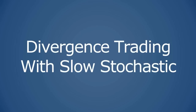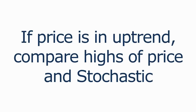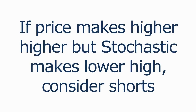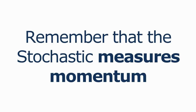Divergence trading: price goes one way, stochastic goes another. This was the original play that Lane was looking at when developing the stochastics, but an indicator signal by itself is not always the smartest opportunity. If price is in a downtrend, compare the lows of price and the stochastics. If prices are in an uptrend, compare the highs of price and the stochastics. If price makes a lower low but the stochastics makes a higher low, consider longs. If price makes a higher high but the stochastics makes a lower high, consider shorts. The stochastic measures momentum — even though price is moving down, the momentum calculation is pointing to the upside. It does not mean we're about to have a strong trend to the upside, though.